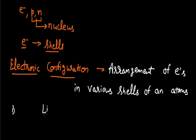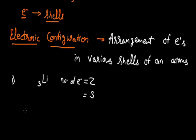The very first thing we need to know is how many total electrons this lithium atom contains, as these electrons are to be arranged in various shells. As we have seen, the number of electrons in any atom is equal to its atomic number. Since the atomic number of lithium is 3, there are total 3 electrons to arrange. So the very first condition is: find the total number of electrons present in an atom.